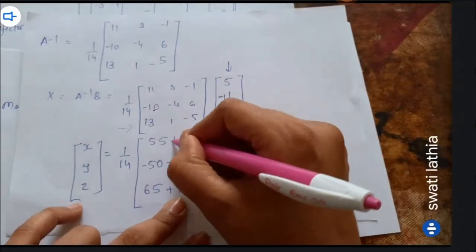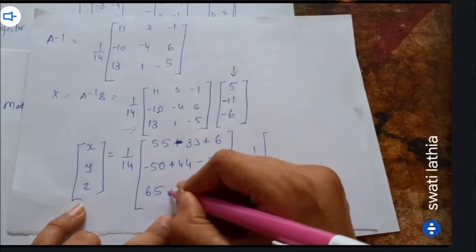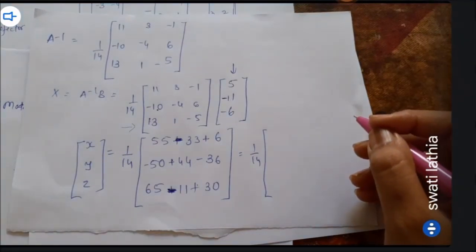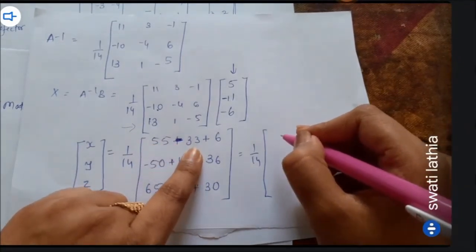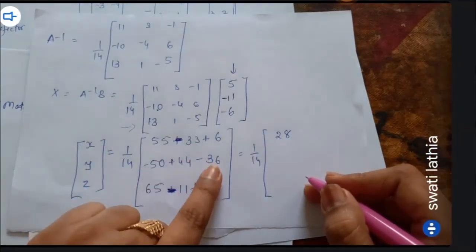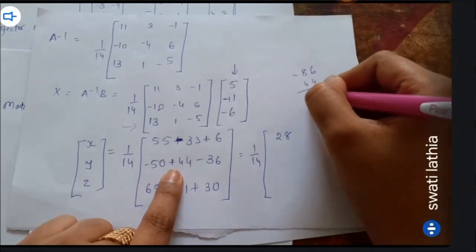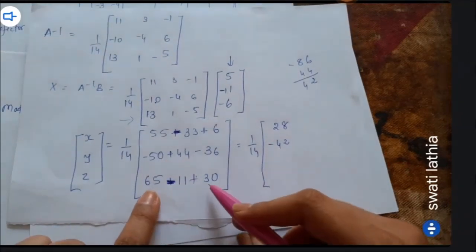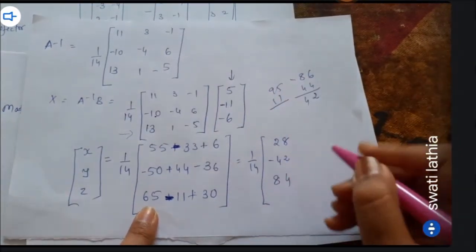So we have minus 11, which gives minus 33, and then plus 6. Correcting: 55 minus 33 = 22, plus 6 = 28. Next: minus 50 and minus 36 gives minus 86; minus 86 subtract 44 gives minus 42. Then: addition gives 95, minus 11 = 84. Now multiplying each by 1/14: 28/14 = 2, minus 42/14 = minus 3, 84/14 = 6.